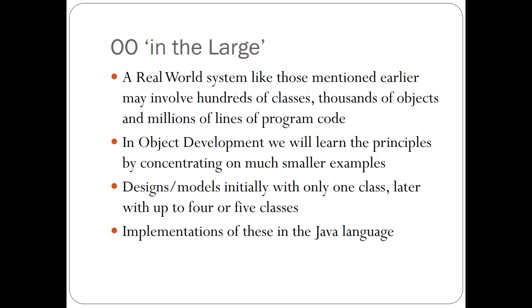A real-world system could have millions of lines of code and hundreds of classes. In general, OO development at large scale is done in teams, where multiple classes are developed by lots of team members. Programming teams build their classes with their instance variables and methods and then join classes together to make much larger programs. We're only working in a one-semester module, so we'll work on smaller examples and build them up as the semester goes on. Later on we'll be looking at programs with about four or five classes, and the language we're going to use is Java.